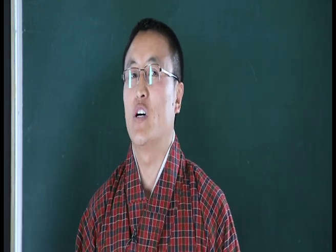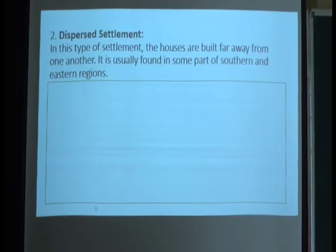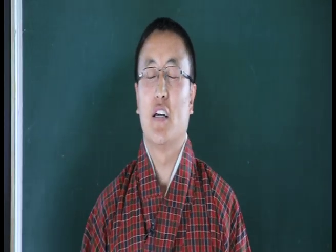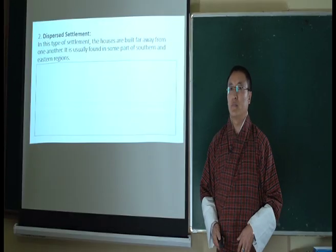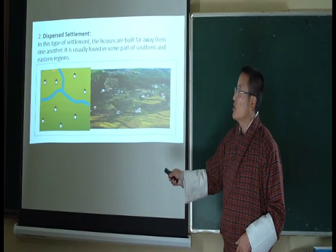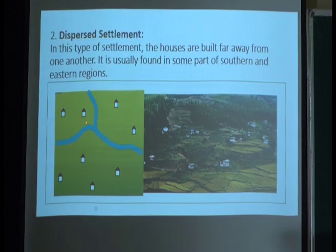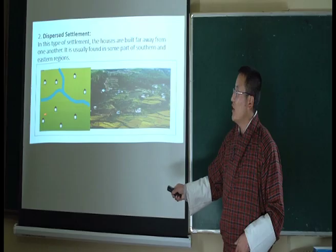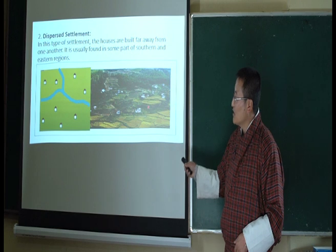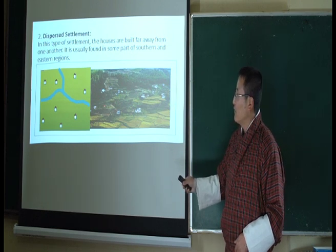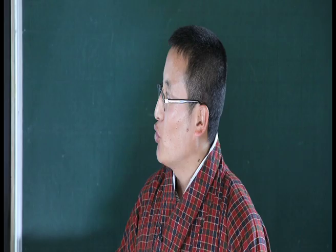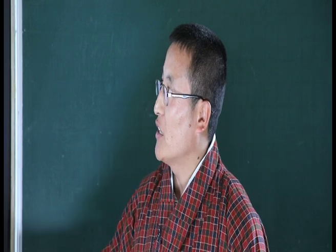The second pattern is dispersed settlement, where houses are built far away from each other. This type is found in the eastern and southern parts of our country. The diagram shows how dispersed settlement is formed, with four or more houses built far apart from each other. When such settlements are seen, we call it dispersed settlement.